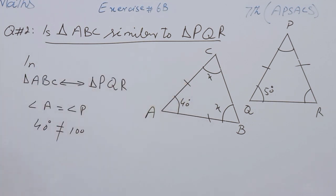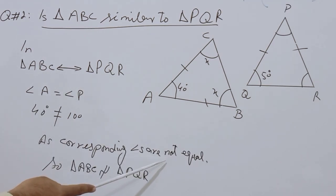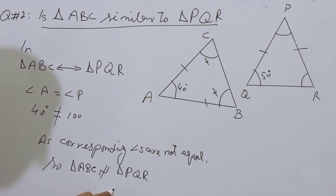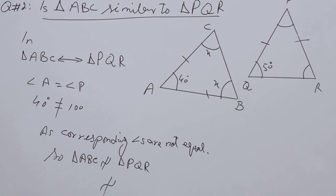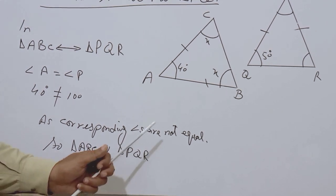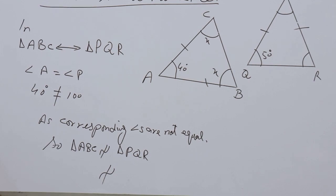That is why these two triangles are not similar. The statement is written as: corresponding angles are not equal, so Triangle ABC is not similar — this sign is the sign of similarity, and when we write a line on it, it shows it is not similar — to Triangle PQR, as their corresponding angles are not congruent.